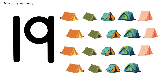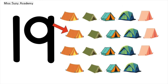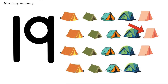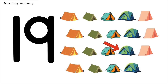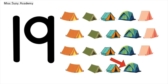19 crabs: 1, 2, 3, 4, 5, 6, 7, 8, 9, 10, 11, 12, 13, 14, 15, 16, 17, 18, 19. 19 crabs!